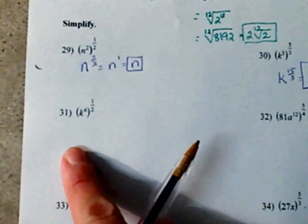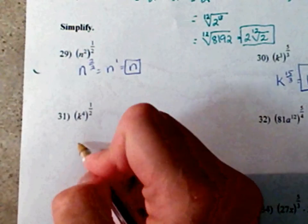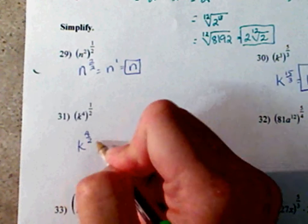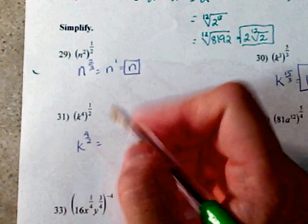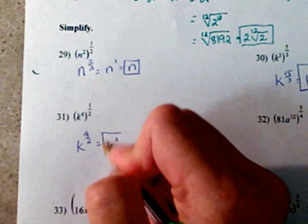Number 31. Same thing. k to the 4, to the 4 over 2. 4 divided by 2 is 2. That's the same thing as k squared.